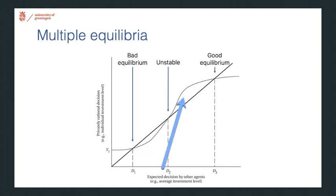So we need a big push to get you past the unstable point, and then you can reach the good equilibrium.